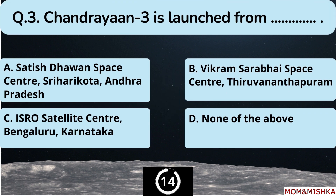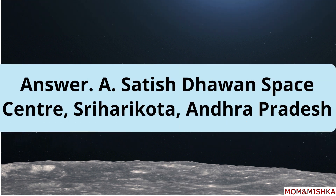Chandrayaan-3 is launched from which location? The answer is option A: Satish Dhawan Space Centre, Shri Hari Kota, Andhra Pradesh.